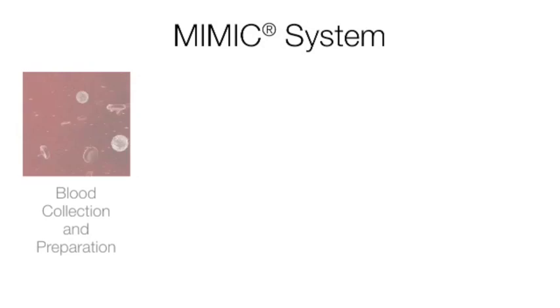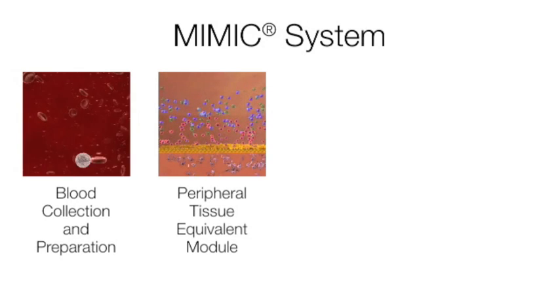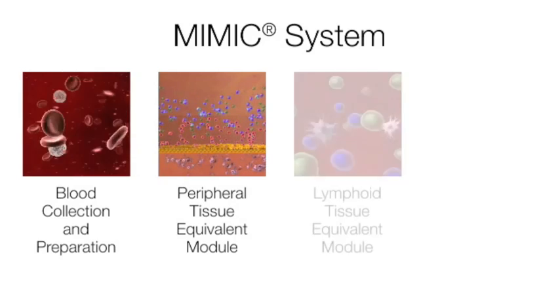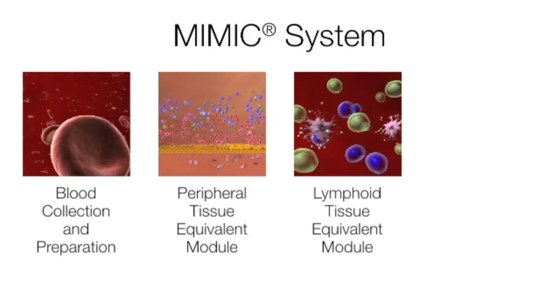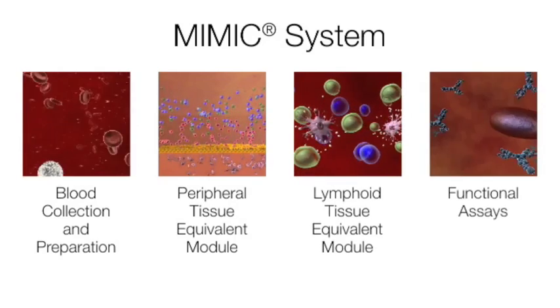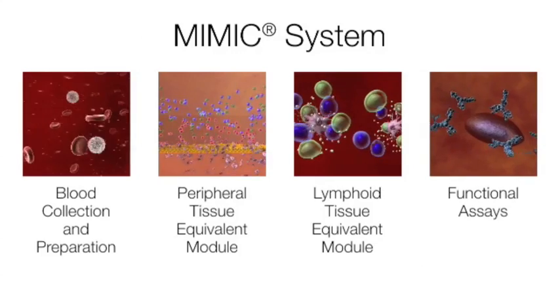The MIMIC System has four steps: blood collection, the peripheral tissue equivalent module, the lymphoid tissue equivalent module, and functional assays.